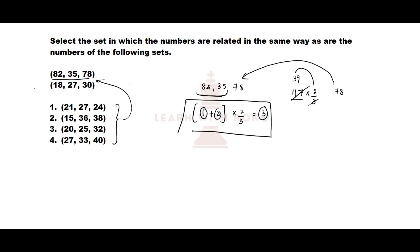So the pattern is: add the first number and the second number, then multiply the result by 2/3 to get the third number. Let us check whether this pattern follows for the second set. First number plus second number: 18 plus 27 equals 45. And 45 multiplied by 2/3 gives 30, which is the third number. The pattern is verified.